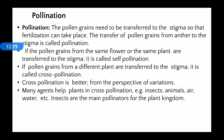For cross-pollination to take place, pollen grains must travel from one plant to another. Many natural agents help transfer pollen grains: insects, animals, air, and water. When air flows, pollen grains may be dispersed from the anther to the stigma. Water transfers pollen for plants near water bodies. Insects also help transfer pollen grains from anther to stigma. Insects are the main pollinators in the plant kingdom.